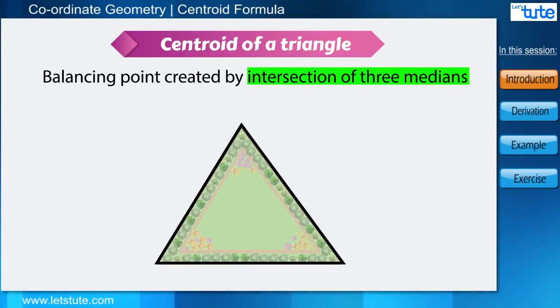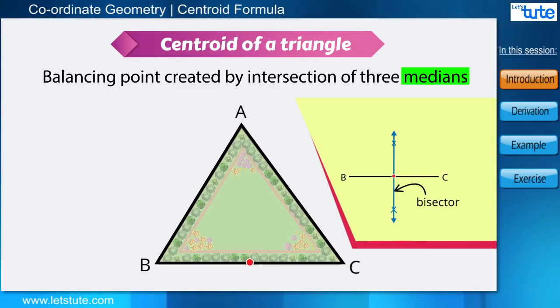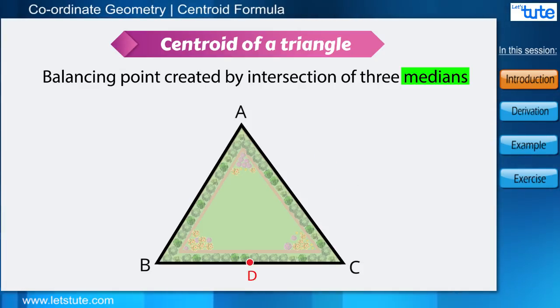So the first thing we need is to draw the medians. For ease of understanding, let us name the garden as ABC. First we will find the midpoint of side BC, let's name it as D, and join the midpoint D to the opposite vertex, that is vertex A. Here we got median AD. Similarly, we can draw median BE and median CF.